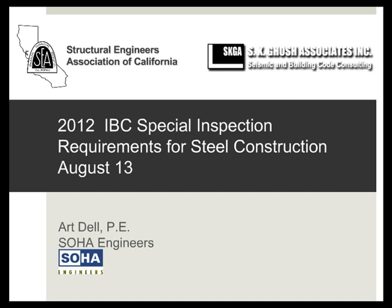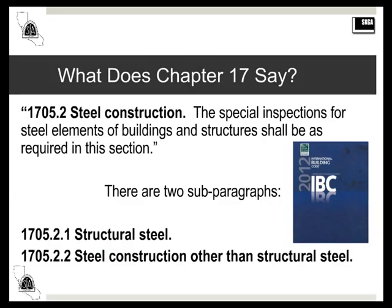I'm going to be talking about special inspection for steel construction. Why am I using the term steel construction? Let's see what Chapter 17 of the 2012 IBC says. Section 1705 covers special inspection and testing requirements for all types of construction, and 1705.2 is called steel construction.